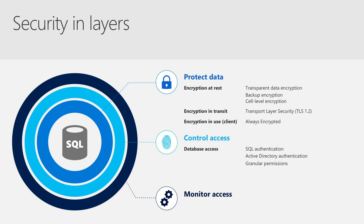While features like permissions and Active Directory authentication control access at the database layer, SQL Server also supports several programmability features that make it easier for you to control which data can be accessed through the application layer. For instance, row level security allows you to control access to specific rows in a table based on the querying user's role, department, tenant ID, or other criteria. By attaching this access logic to the database table itself, you simplify your application code and you reduce the risk of accidental data exposure. Similarly, dynamic data masking allows you to mask query results on the fly according to a centralized policy within the database. For example, you might only expose the area code of a phone number or the domain of an email address to end users of an application. By having SQL Server enforce the masking policy, you simplify your application code and reduce the risk of accidental data exposure.